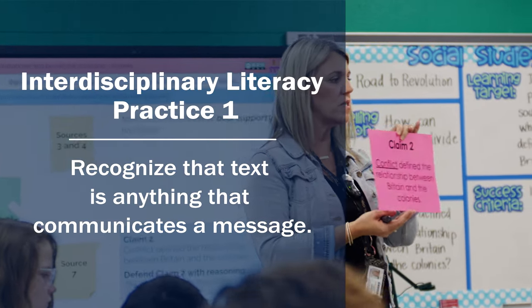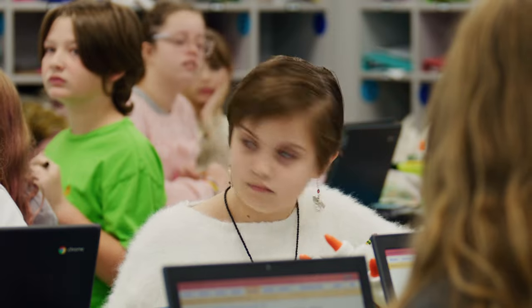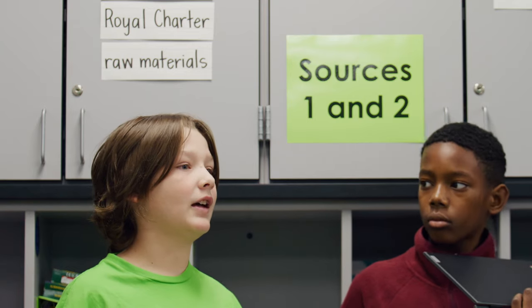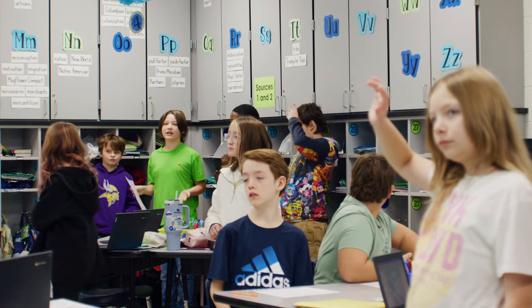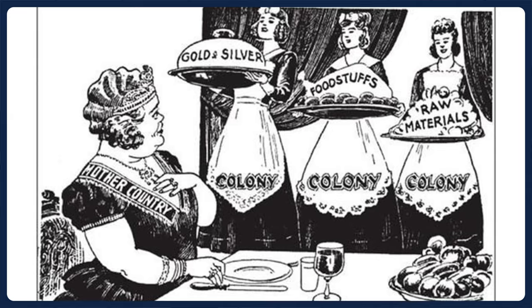The way I engaged the students in the interdisciplinary literacy practices was a couple of different ways. The first ILP is that text is anything that communicates a message. This lesson really highlighted that because there was no text for them to read — they weren't reading paragraphs of text to find out what was going on between Britain and the colonies. They were actually looking at a series of maps, videos, and a political cartoon, and then they had to make meaning of that. They had to realize that just because we don't have anything to read, we are still getting messages from the primary and secondary sources that we are viewing.